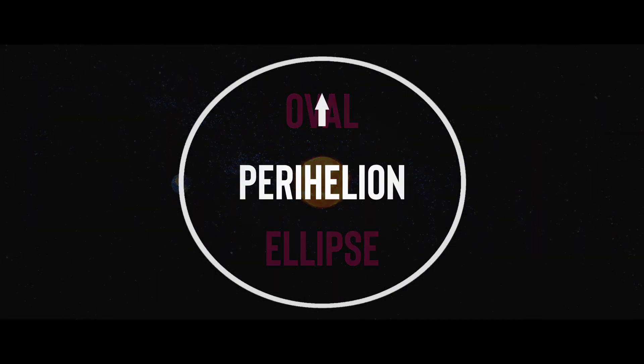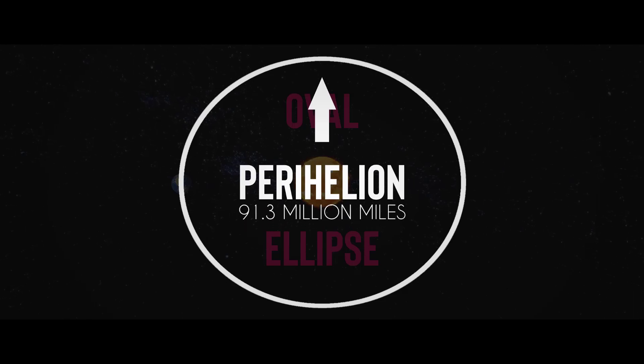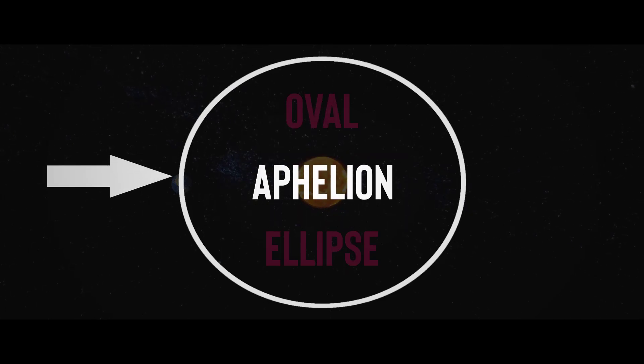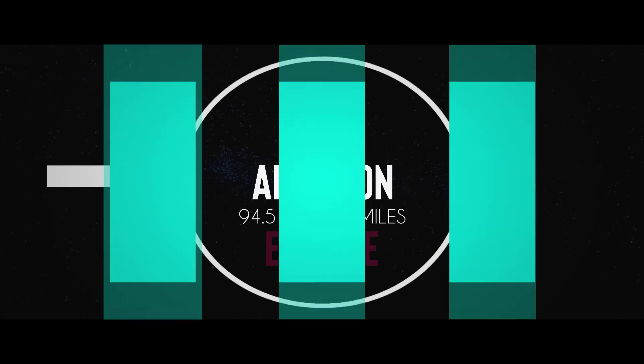The perihelion is the closest the Earth ever gets to the Sun, which is about 91.3 million miles or 146 million kilometers. But the aphelion is the Earth's farthest point away from the Sun, which is about 94.5 million miles or about 152 million kilometers away.